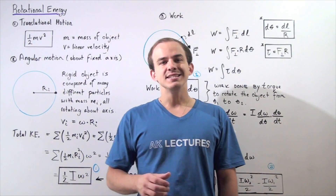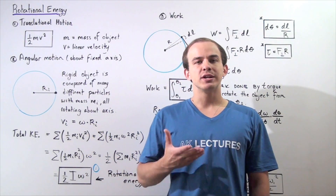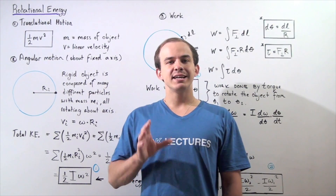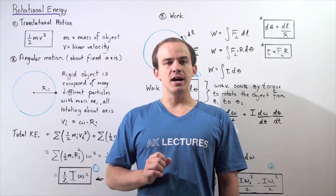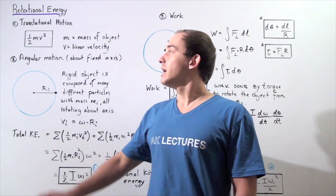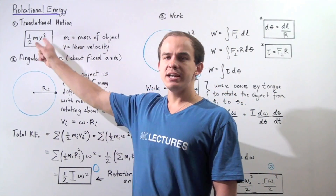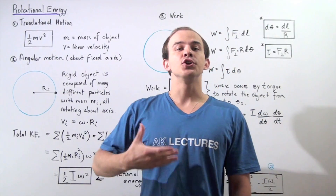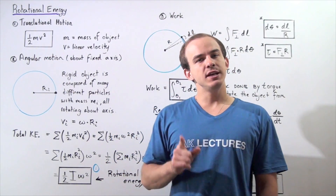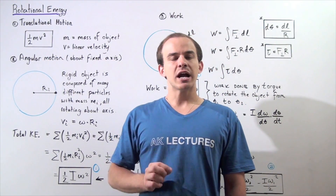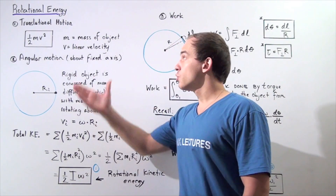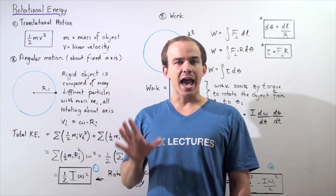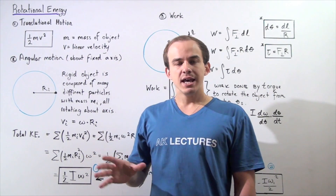Recall that whenever an object is undergoing translational motion, that object is said to have kinetic energy, and the quantity of kinetic energy is given by the equation one-half mv squared, where m is the mass of the object — the inertia of the object — and v is the linear velocity of our translating object. This is known as translational kinetic energy.